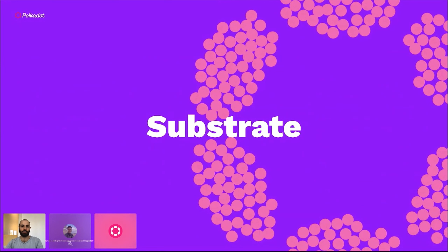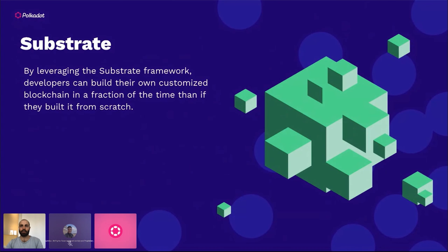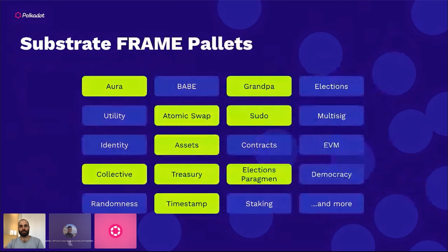A quick high-level overview of Substrate: Substrate is a framework for building blockchains — think of how React is a framework for building UIs. It has taken common parts of blockchains, after over a decade of blockchain development, and turned them into modular parts you can use like Lego pieces. These are called FRAME pallets — modules that include specific parts of blockchain functionality. You can include some, all, or a few depending on what you're trying to do, and you can also create your own pallets for unique functionality.